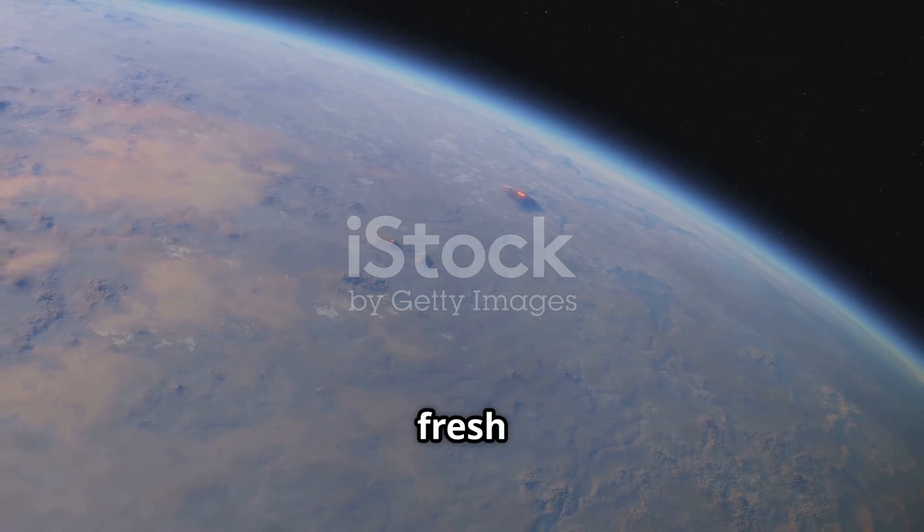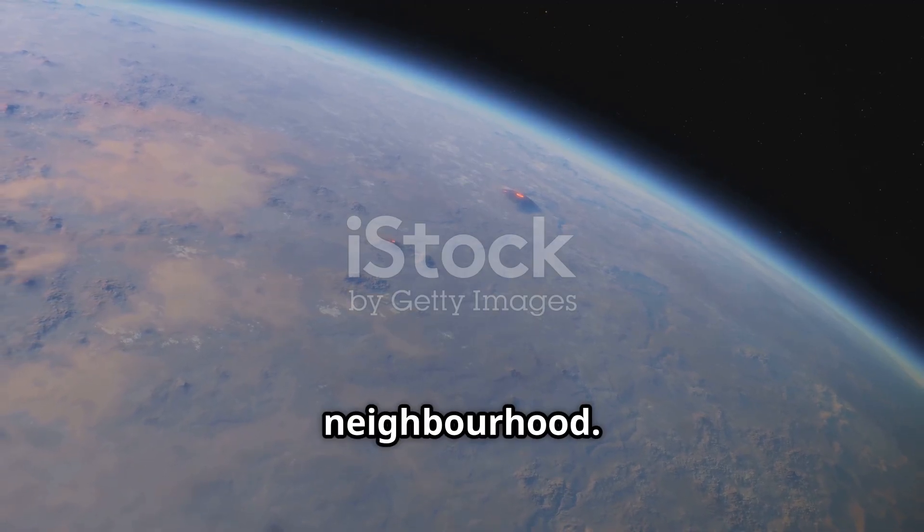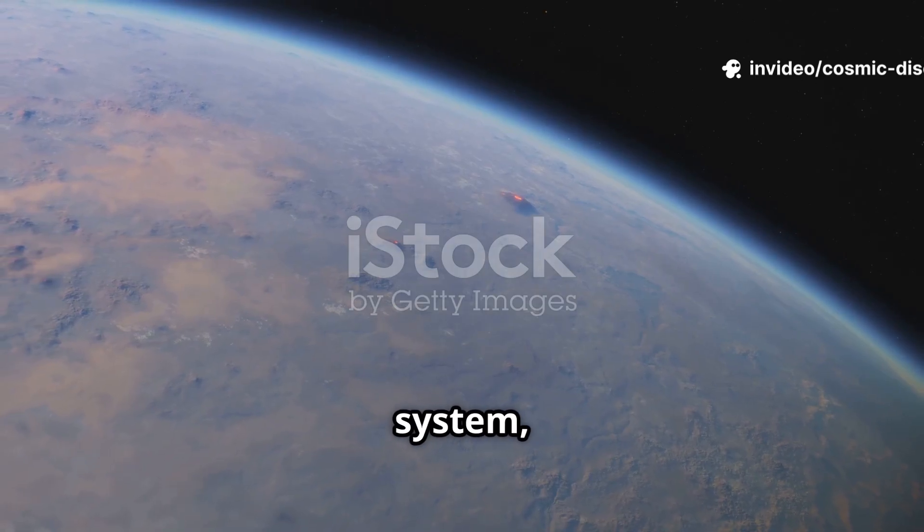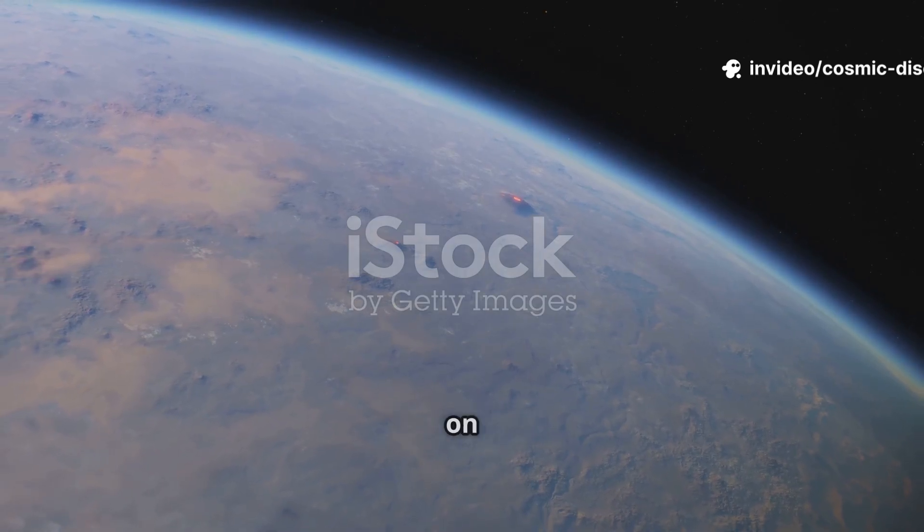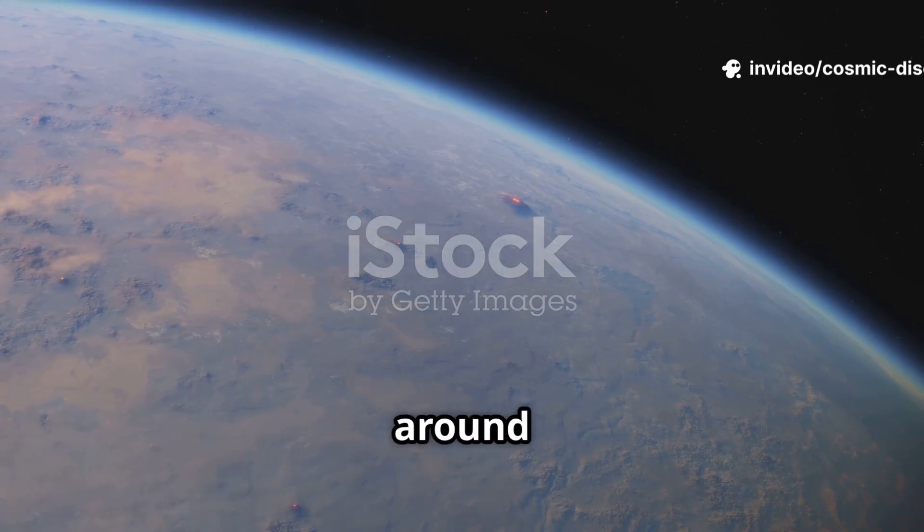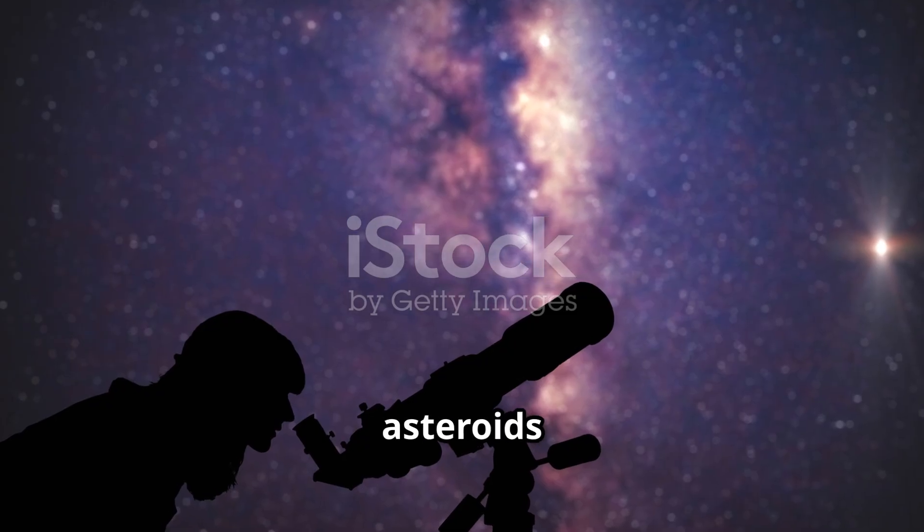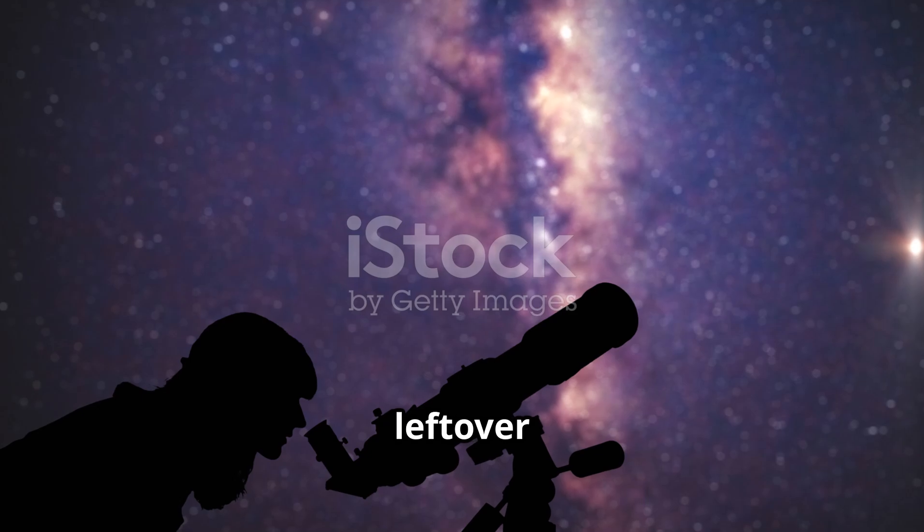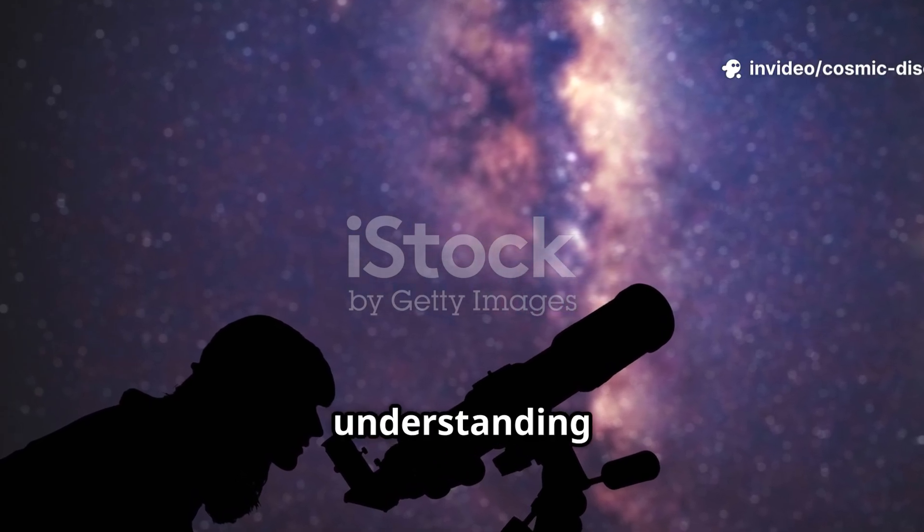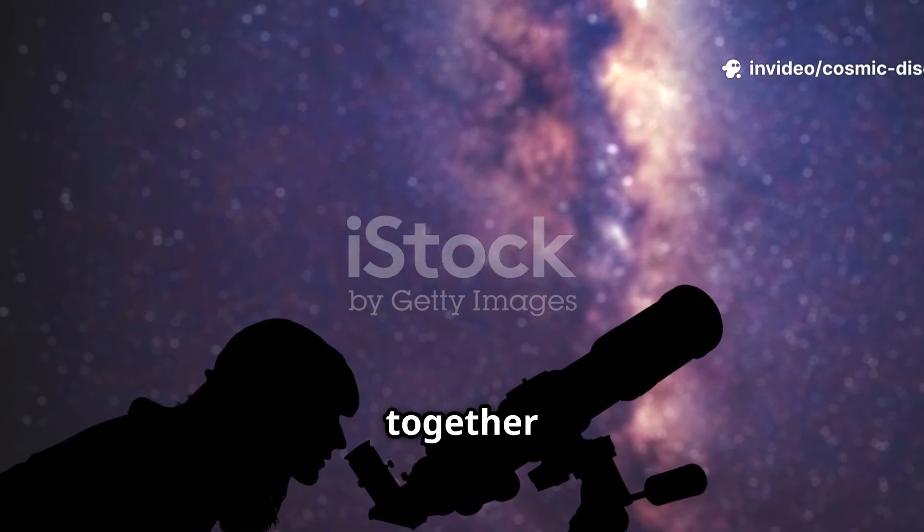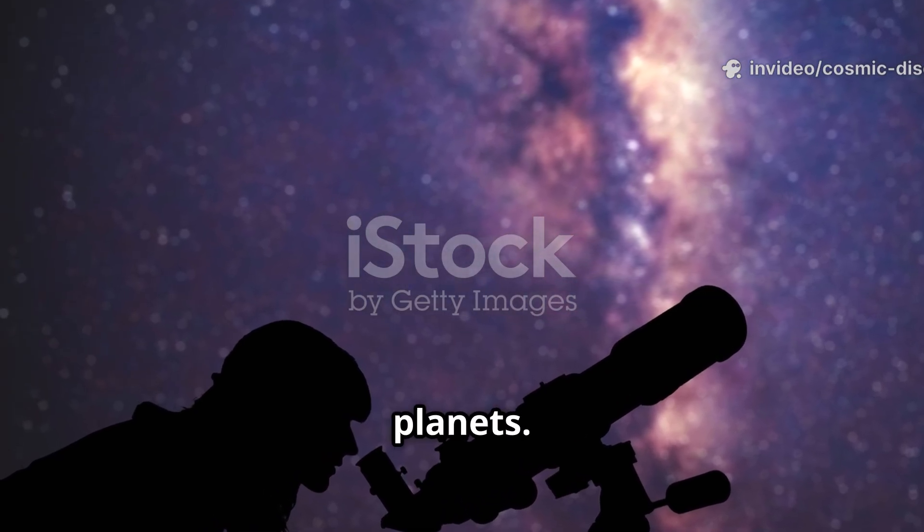It has produced stunning new images of the planets in our solar system, revealing intricate weather patterns on Jupiter and faint rings around Neptune with breathtaking clarity. It is studying asteroids and comets, the leftover building blocks from our solar system's formation. By understanding their composition, we learn more about the raw materials that came together to form Earth and the other planets.